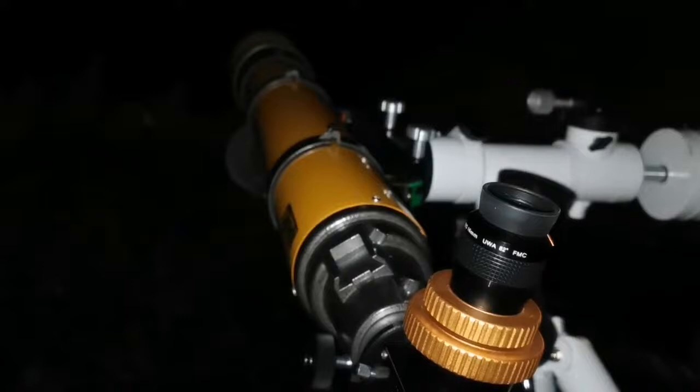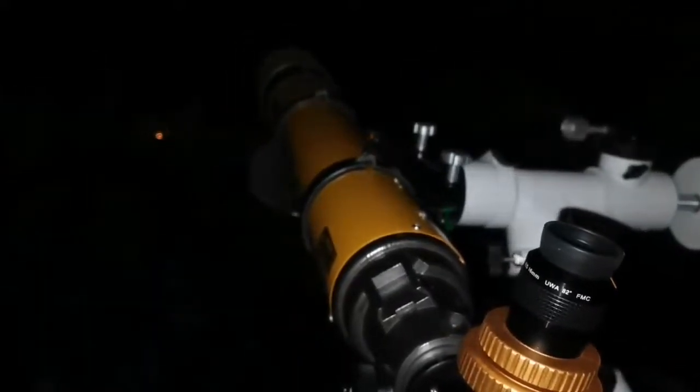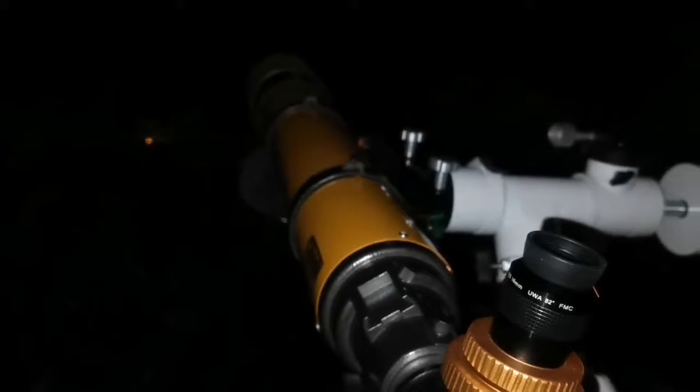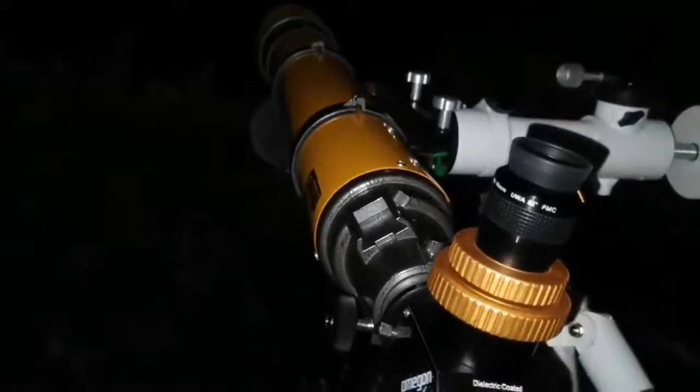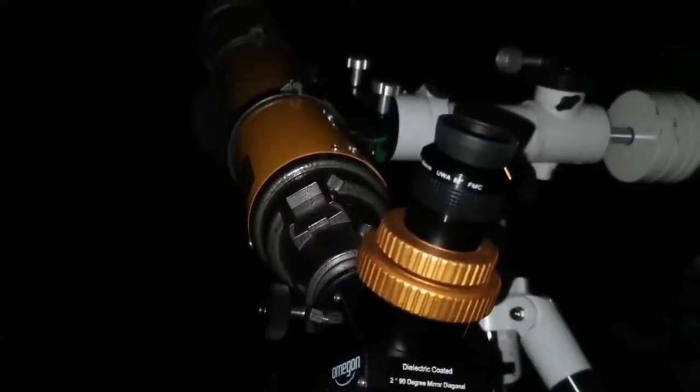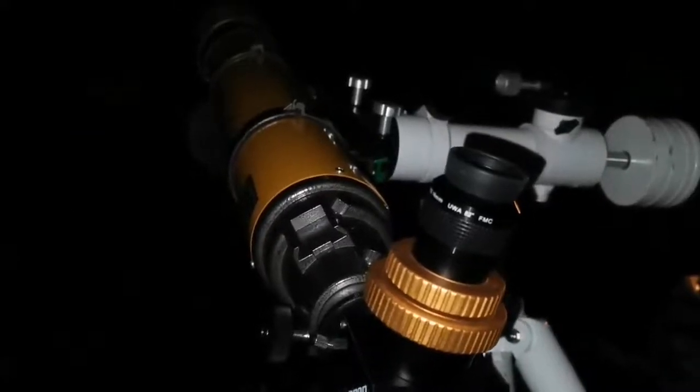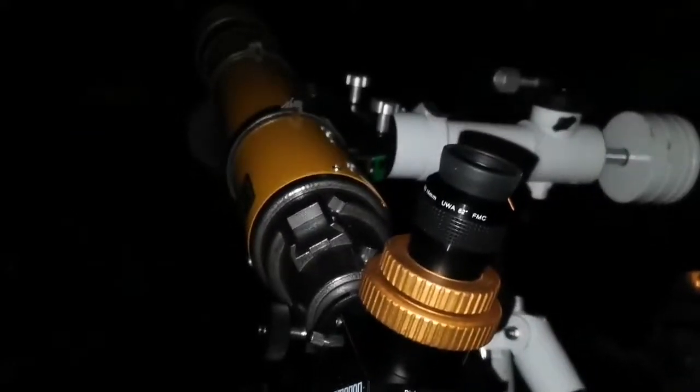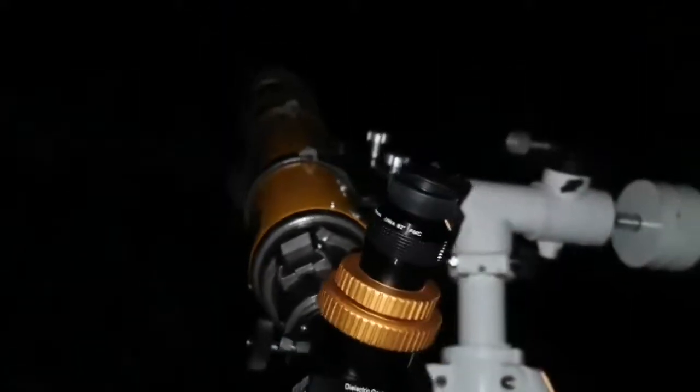Okay, I'm observing with the Konus 120, equal to the Sky Watcher 120 achromat telescope, and I'm using an Omegon star diagonal and Sky Watcher eyepiece, 16 millimeter 82 degrees. I'm looking at the Orion Nebula and I looked at the moon also. Very beautiful views.